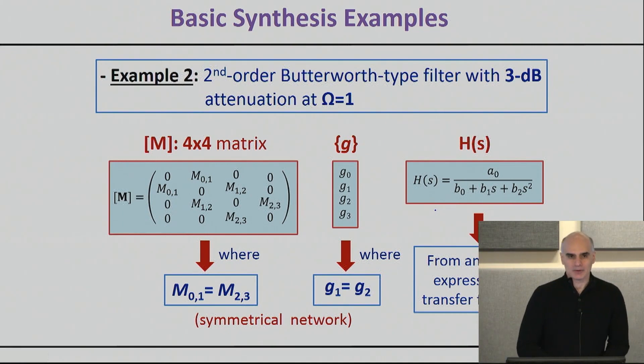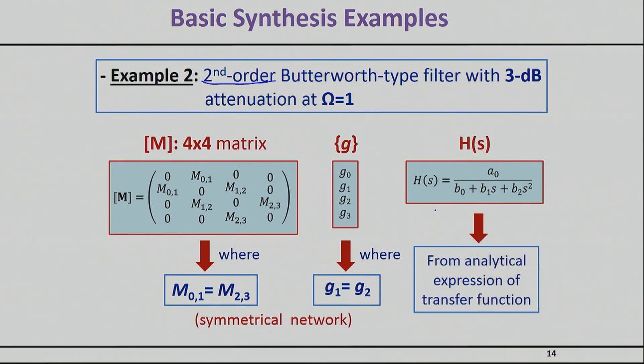So, let's see a second example so we can consolidate our learning a little bit. In this case we're going to do a second order Butterworth type filter. Basically, again, we're going to synthesize this in the frequency domain of omega is equal to 1. Since this is a second order filter, our coupling matrix will end up basically being 4 by 4. This is also a simple filter where we only have direct couplings. So, you will see in the coupling matrix absolutely no cross couplings. In this case we have the advantage of knowing both the G's because it's a Butterworth filter as well as a transfer function. So, we can basically go and find the coupling matrix of this filter both ways.